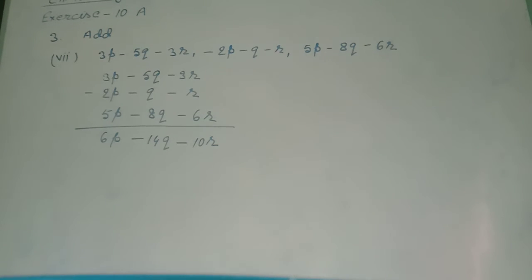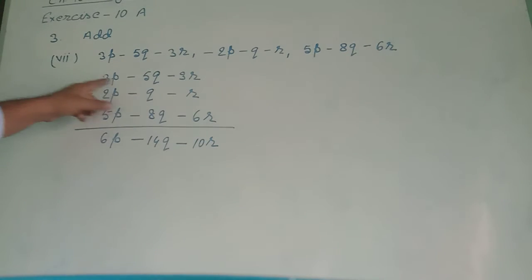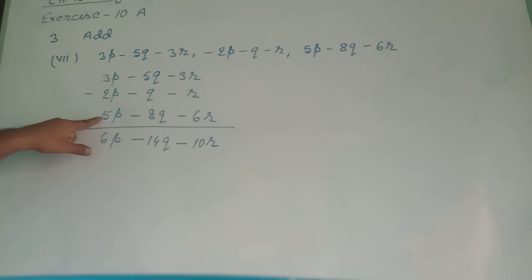Roman number 7. The expressions are: 3p minus 5q minus 3r; minus 2p minus q minus r; and 5p minus 8q minus 6r. For this I have used the column method for addition. These three given expressions are written in columns. In the first column: 3p plus 5p gives 8p, minus 2p gives 6p.